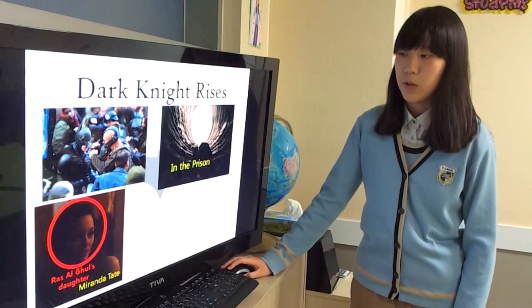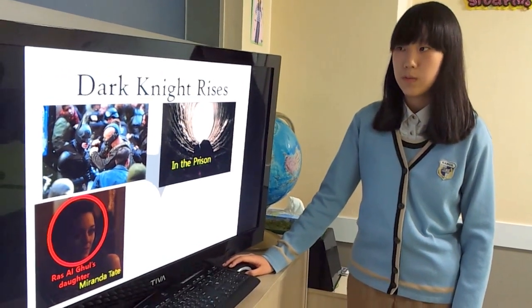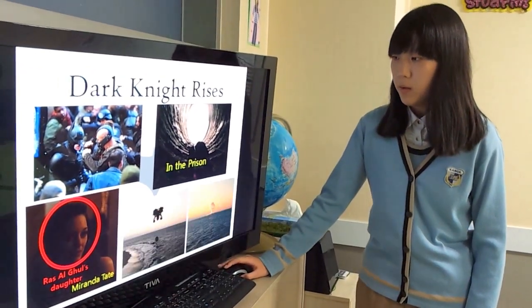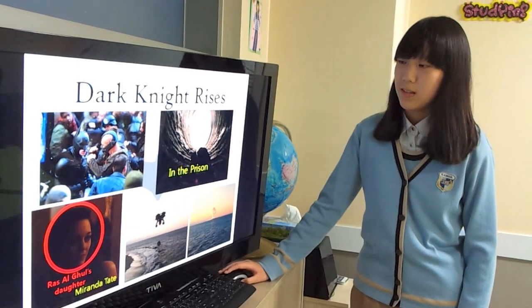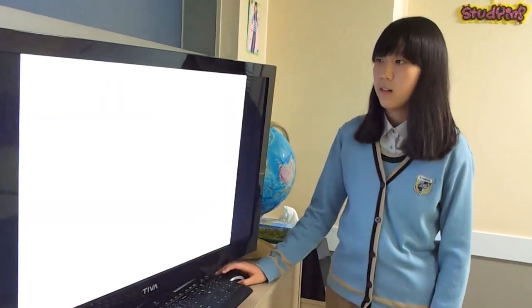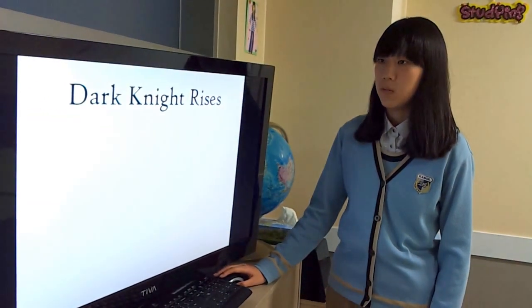Miranda Tate was a robber's daughter, and she was on Bane's side. Batman finally brought the bombs to the sea and saved the city. This is the end of this movie.